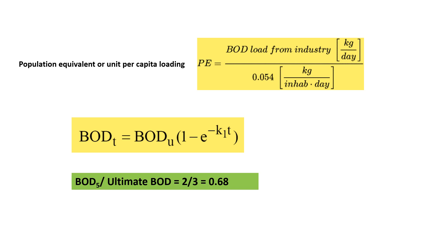The next formula related to BOD is the population equivalent and unit per capita loading. P = BOD load from industries divided by 0.054 kg per inhabitant per day. There is another important relationship: BOD at time t equals BOD ultimate multiplied by (1 − e^(−K1·t)). Also, BOD5 divided by ultimate BOD equals 2/3, approximately 0.68 or 68%. This is a very important relationship between ultimate BOD and BOD at 5 days.